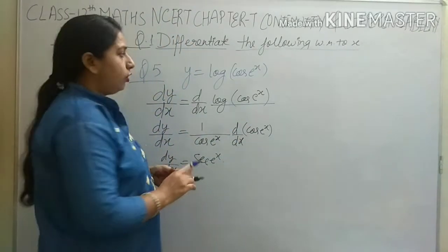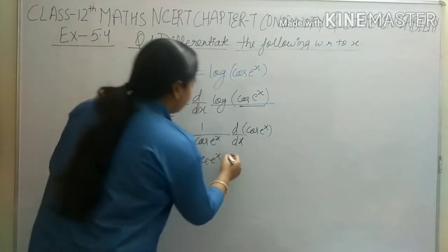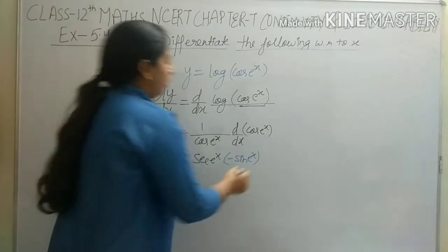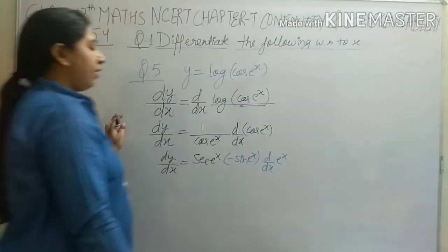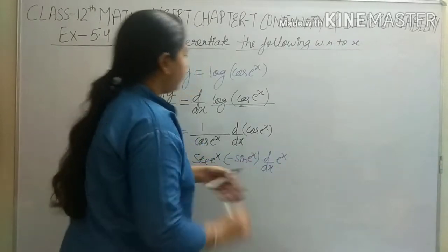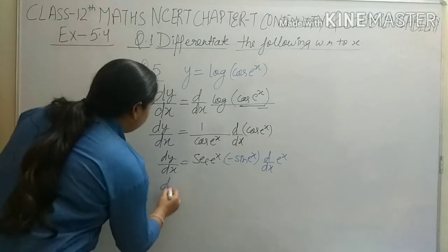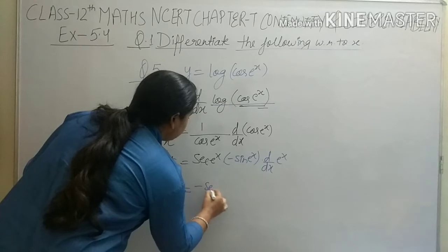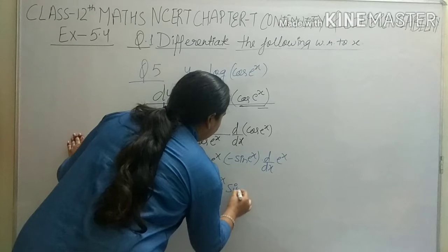We can write sec(e^x). Differentiation of cos gives minus sine of e^x. Now differentiation of e^x gives e^x. So combining: dy/dx equals minus sin(e^x) times e^x divided by cos(e^x), which gives dy/dx equals minus e^x times sec(e^x) times sin(e^x) divided by cos... which simplifies to minus e^x tan(e^x).